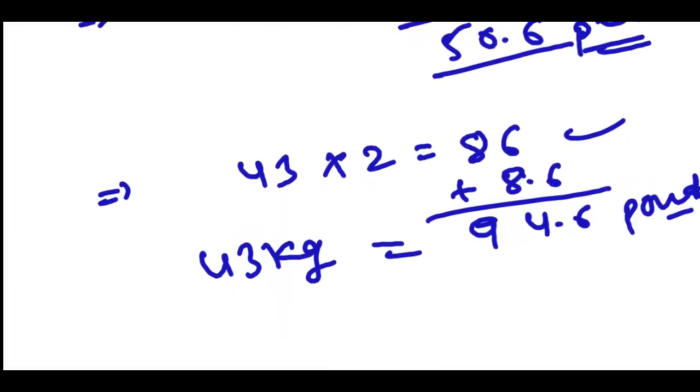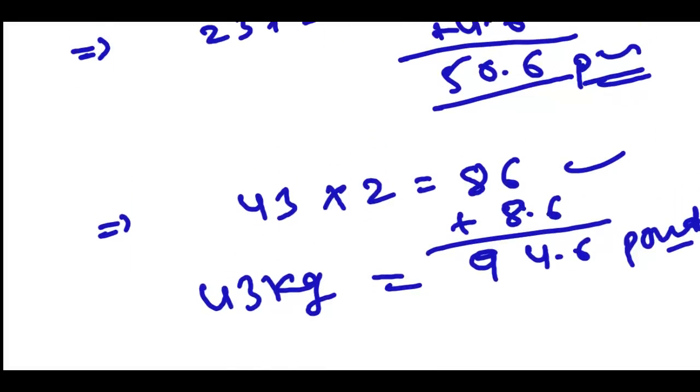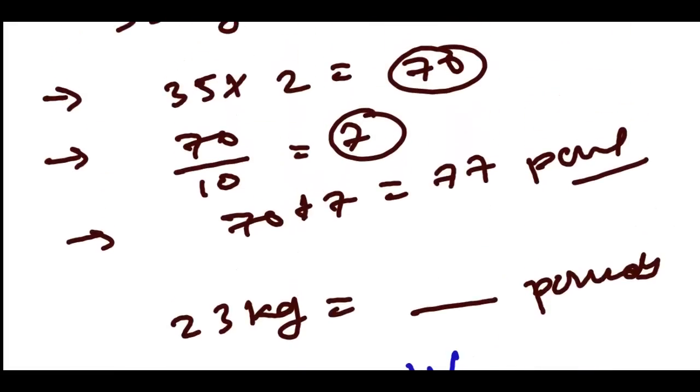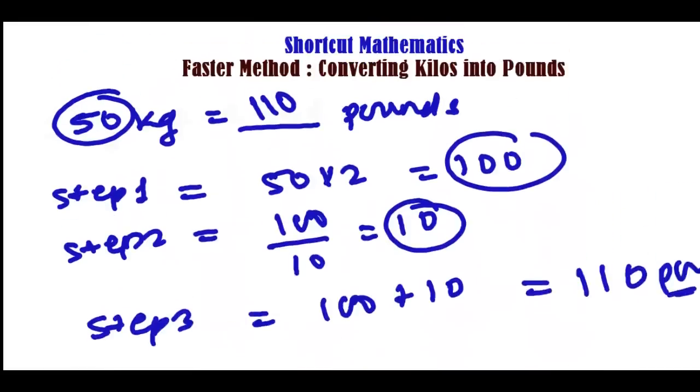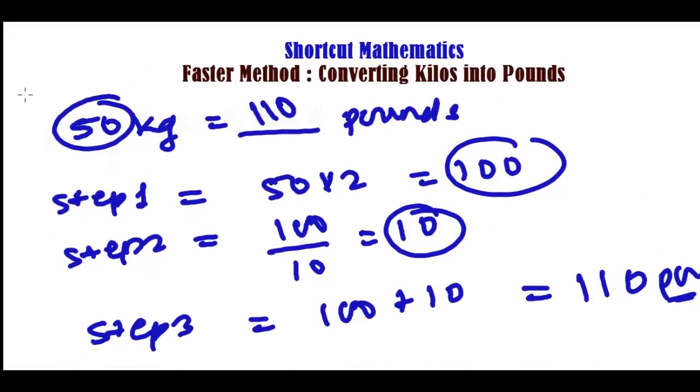So this is a very simple shortcut and this is an approximate value, not exactly. Approximate means almost very close to the answer, if you forget the few digits after the point, because one kilogram equals 2.20462 pounds.